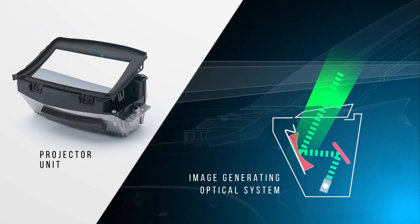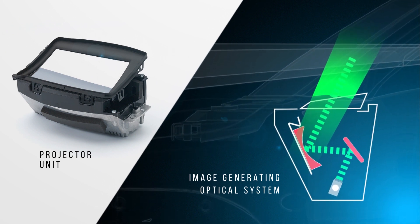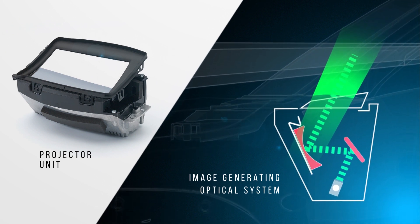Inside, you'll find a picture-generating optical system. This is the key to understanding how the HUD can project a virtual image directly onto the windscreen. Let's now break it down and see how it works.